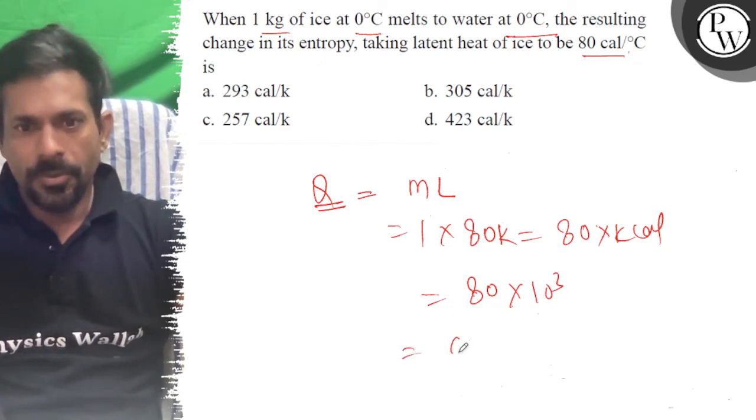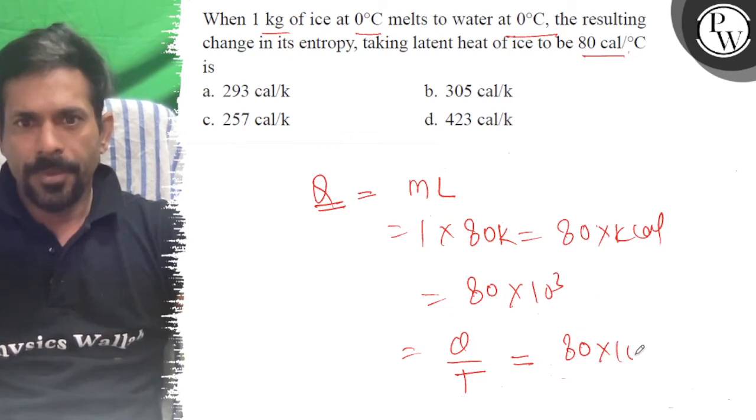And now entropy is Q by T. So that is 80 × 10³ divided by - we'll divide this by 273.